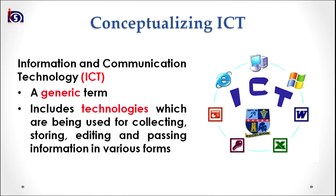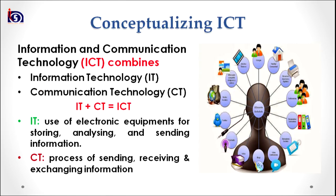ICT includes technologies used for collecting, storing, editing, and passing information in various forms — for example, internet, computers, cameras, and everything which can be used for collecting, storing, editing, and passing information. Information and Communication Technologies emerges from the combination of two technologies: Information Technology, popularly known as IT, and Communication Technology, popularly known as CT. When we combine IT and CT, we have ICT.